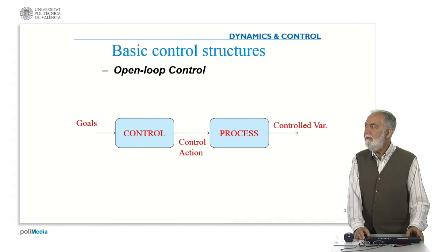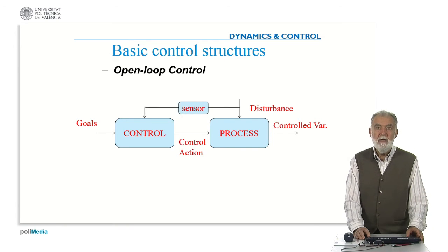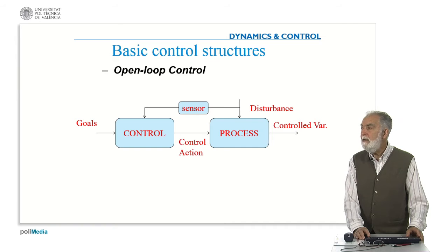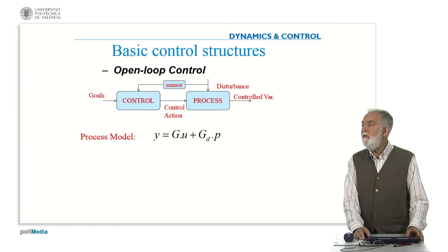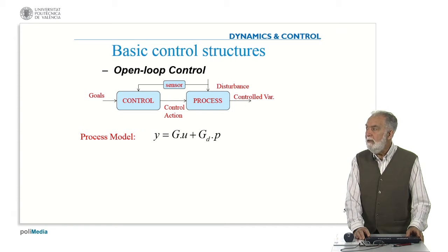In the case of open loop control, we have the process, we have the control generating the control action, and maybe there are some disturbances. In some cases we can measure these disturbances, but the control is fully based on the knowledge we have about the process and the disturbances. We can derive the output of the process depending on the control action and also depending on the disturbance p.